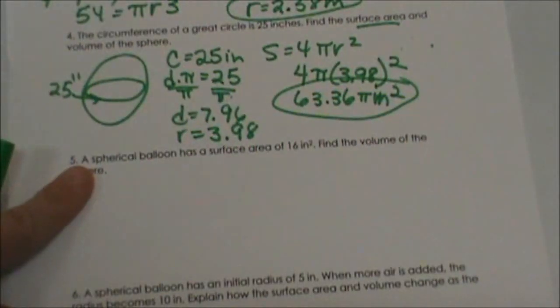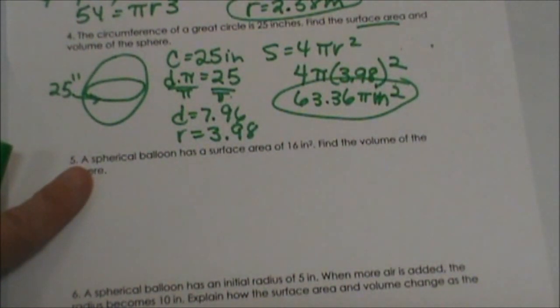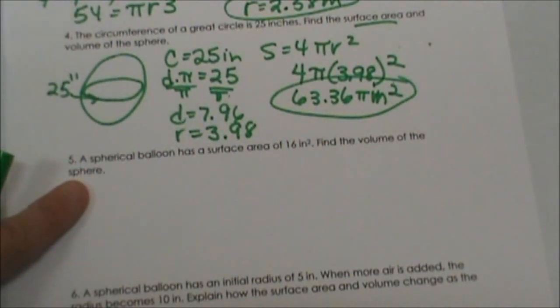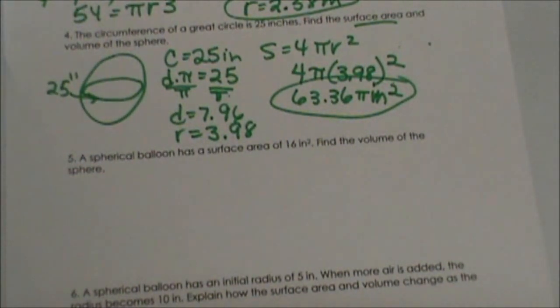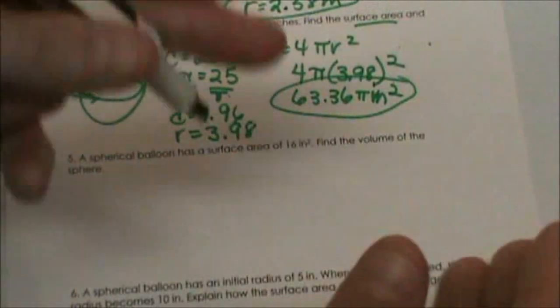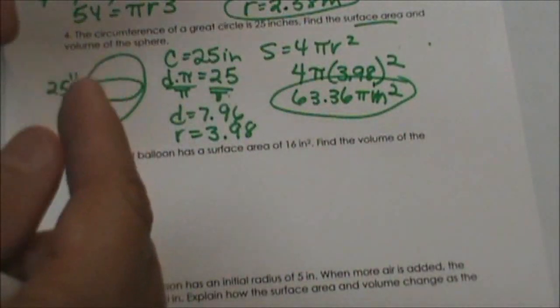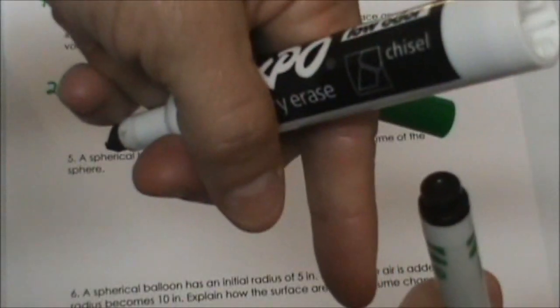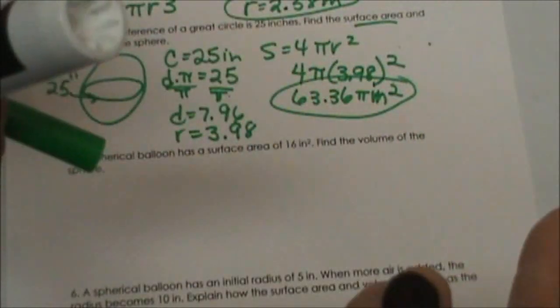This next one is a balloon problem. A spherical balloon has a surface area of 16 square inches. Find the volume. So we are starting with the area — we are working backwards to get the radius, and then we go forward to find the volume. This is a backwards-forward problem because we are given the area, have to work back, and then work forward.